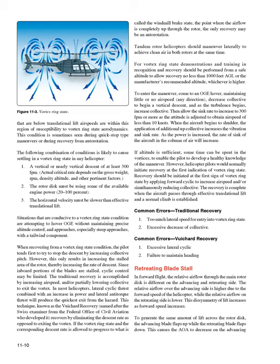When recovering from vortex ring state, the pilot tends to try to stop the descent by increasing collective pitch. However, this only increases the stalled area of the rotor, thereby increasing the rate of descent. Since inboard portions of the blades are stalled, cyclic control may be limited. The traditional recovery is accomplished by increasing airspeed and/or partially lowering collective to exit the vortex. In most helicopters, lateral cyclic thrust combined with an increase in power and lateral anti-torque thrust produces the quickest exit — this is known as the Vuichard recovery, named after the Swiss examiner who developed it, and recovers by eliminating the descent rate rather than exiting the vortex. If the vortex ring state progresses to the windmill brake state, the only recovery may be autorotation.